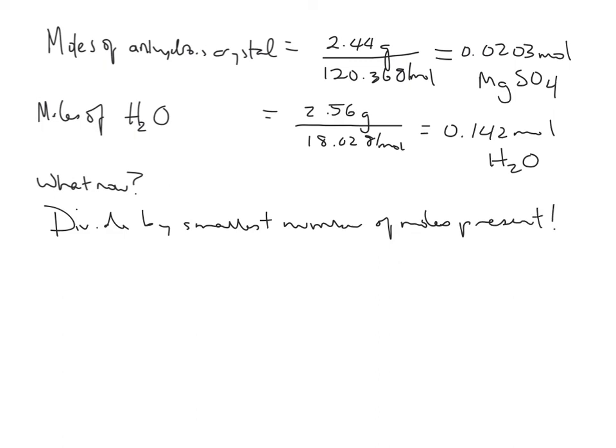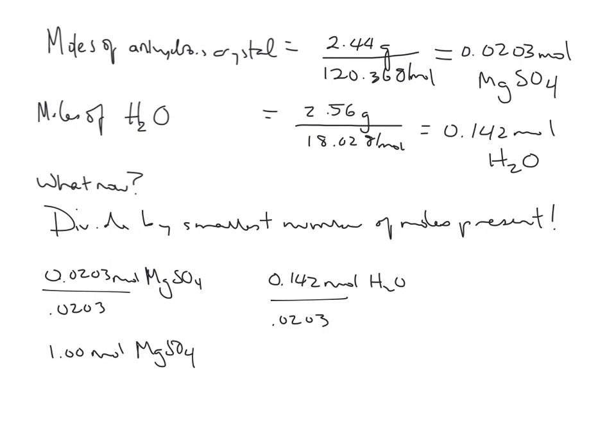So that would be 0.0203 moles of MgSO4 divided by 0.0203. And for the water, 0.142 moles of H2O divided by the smallest amount of moles, which was 0.0203. And you're going to wind up with 1.00 moles of the magnesium sulfate. And this works out nicely at 7.00 moles of H2O.